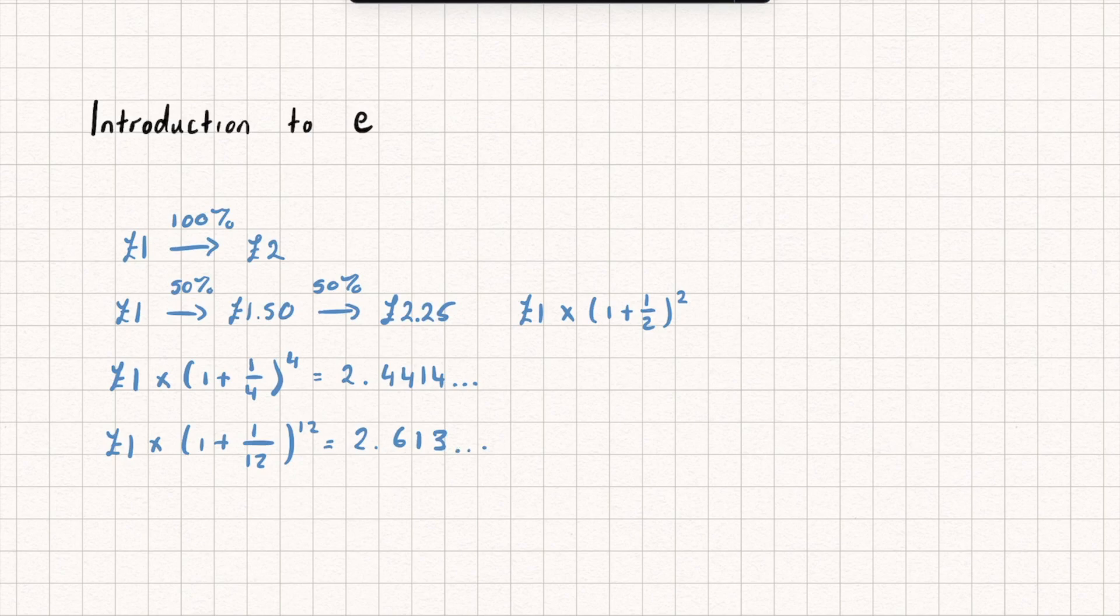And so you can see I've again made more money by receiving a lesser interest rate even more regularly. And so you might be thinking well surely if I just keep increasing how often I'm getting the money I'm going to get just more and more. Or does it actually stop when it gets to a certain point? So let's see if we can calculate that.